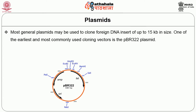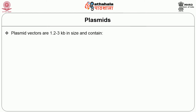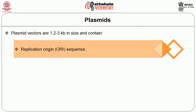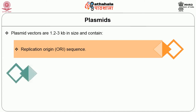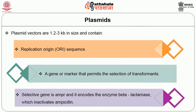One of the earliest and most commonly used cloning vectors is the PBR322 plasmid. Other cloning vectors include the PUC series of plasmids, and a large number of different cloning plasmid vectors are also available. Plasmid vectors are 1.2 to 3 kb in size and contain a replication origin sequence (ORI), a gene or marker permitting selection of transformants, and a selective gene conferring resistance to ampicillin — coding for the enzyme lactamase, which inactivates ampicillin.